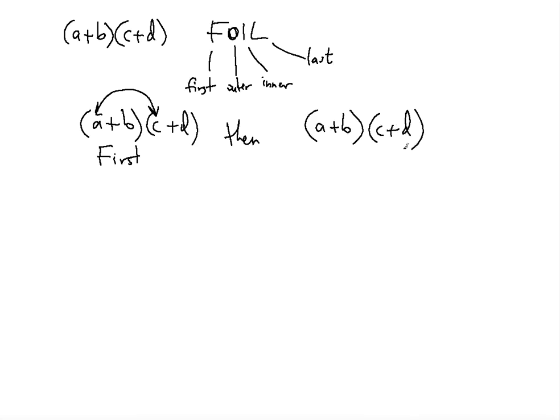Then we will have the outer step. Outer means the extremes, the farthest from each other. The farthest from each other will be a and d, because there's nothing farther than a and d from each other. That's called the outer.